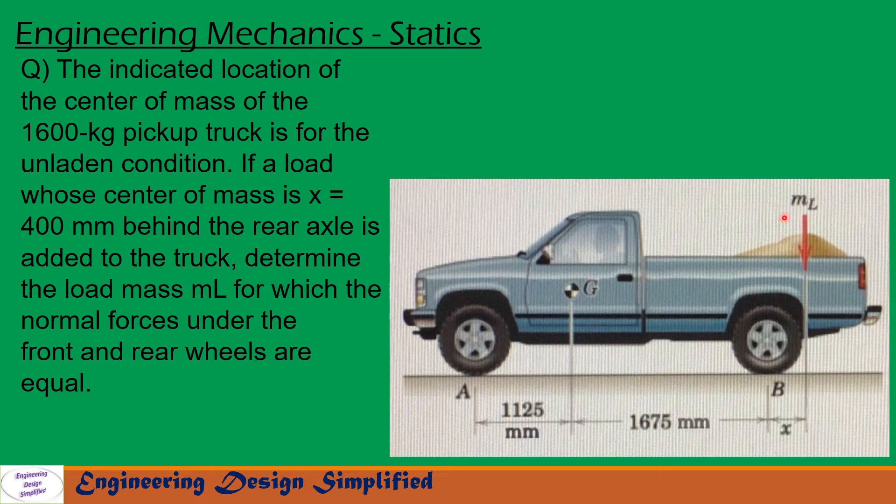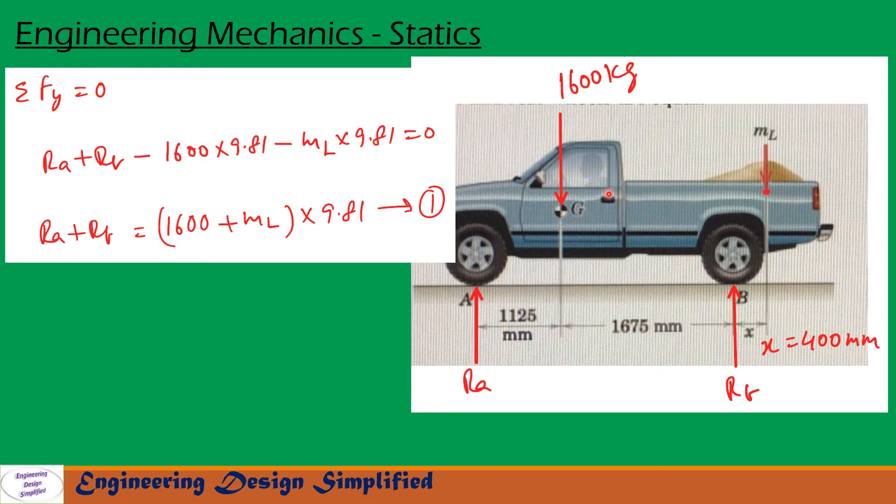Now in this problem we need to find this load ML for the reactions at B and A are equal. Let us see in the coming slides how to solve this problem. First let us see forces and reactions. So the mass of the truck 1600 kg is acting at point G vertically downwards and the mass ML is acting at this point the distance is x equal to 400 mm from B acting vertically downwards.